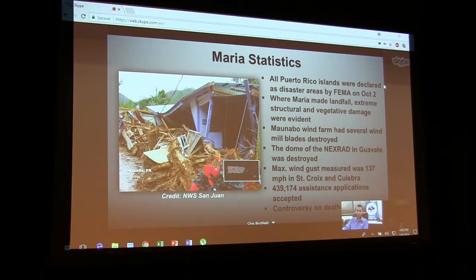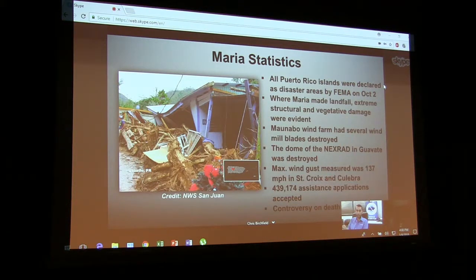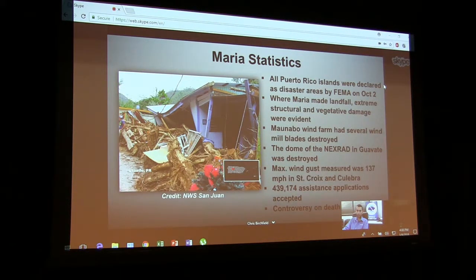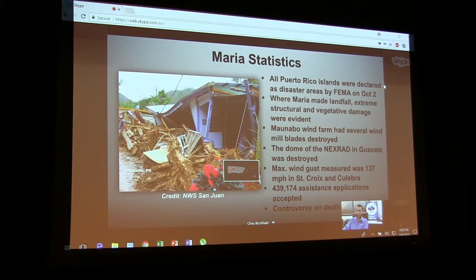So here's some statistics from Maria as it moved over Puerto Rico. All of the islands were declared disaster areas by FEMA on October 2nd. There was major damage on the southeast portion of the island where it made landfall. The dome of the NEXRAD was destroyed, as I showed you. The max wind gusts measured in St. Croix and Culebra was 137 miles per hour. Almost half a million assistance applications from FEMA have been accepted with over a billion dollars in support so far. And there still to this day remains some controversy on the death count. Unfortunately, I don't want to provide you a number with no certainty. But unfortunately, it's probably a pretty high number, but we'll have to wait on that to get the official number.